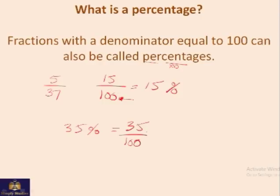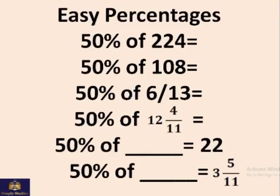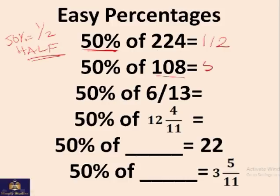Now we'll do some easy percentages. First of all, 50% equals half. Just half the number and you get 50%. So 50% of 224 should be 112, half of this. 50% of 108 should be 54. 50% of 6 over 13 should be 3 over 13. 50% of 12 and 4 by 11, this 12 will become 6, this 4 will become 2, the denominator stays the same.